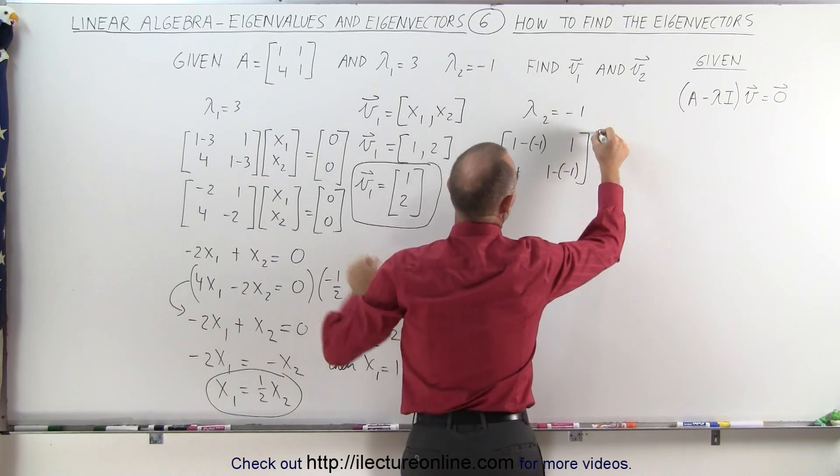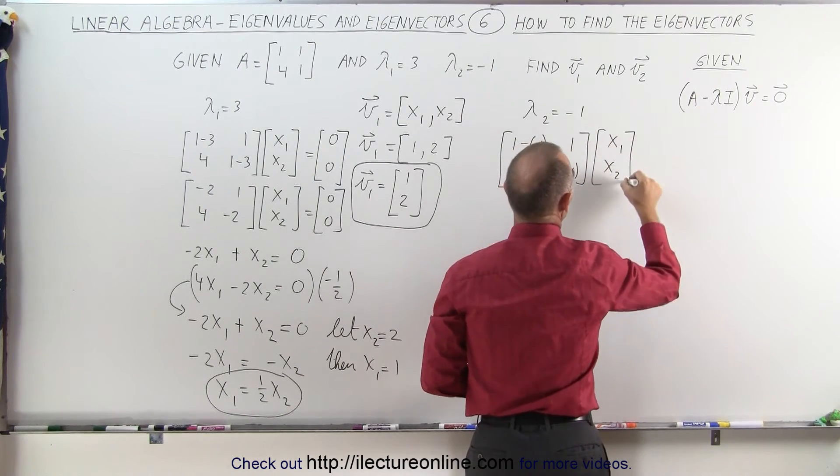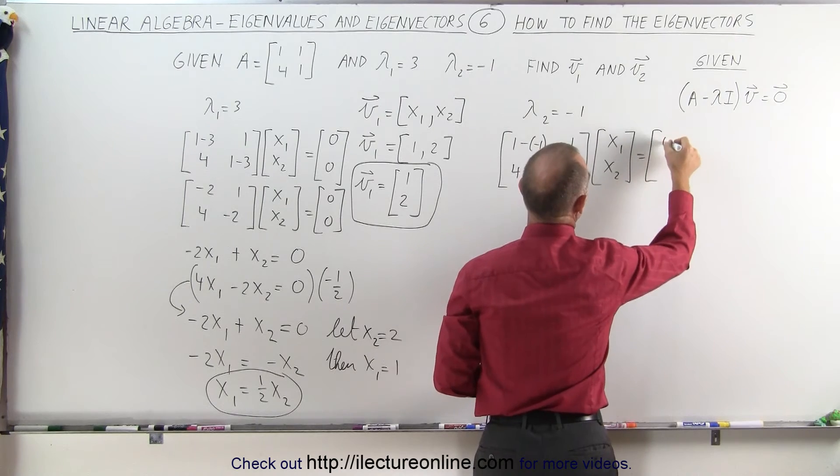I multiply that times my second vector, that will have the two generalized variables, x1 and x2, and that will give me the null vector.